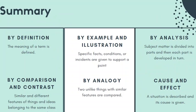To summarize: by definition, the meaning of a term is defined. By example and illustration, specific facts, conditions, or incidents are given to support a point. By analysis, subject matter is divided into parts and each part is developed in turn. By comparison and contrast, similar and different features of things in the same class are pointed out. By analogy, two unlike things with similar features are compared. And by cause and effect, a situation is described and its cause is given.